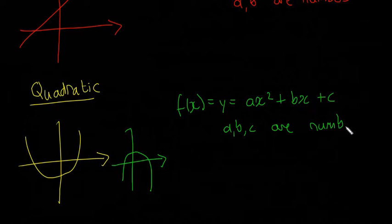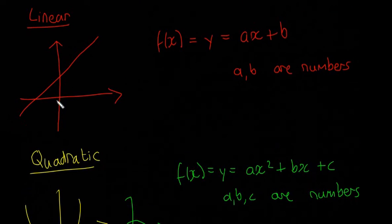If a is a minus number, so if the number before x² is minus, then you're going to have an n shape. That's the difference between U and n - the number before x² is minus. You're going to learn loads more about quadratics when you look at the algebra videos. For linear, you'll look at coordinate geometry.